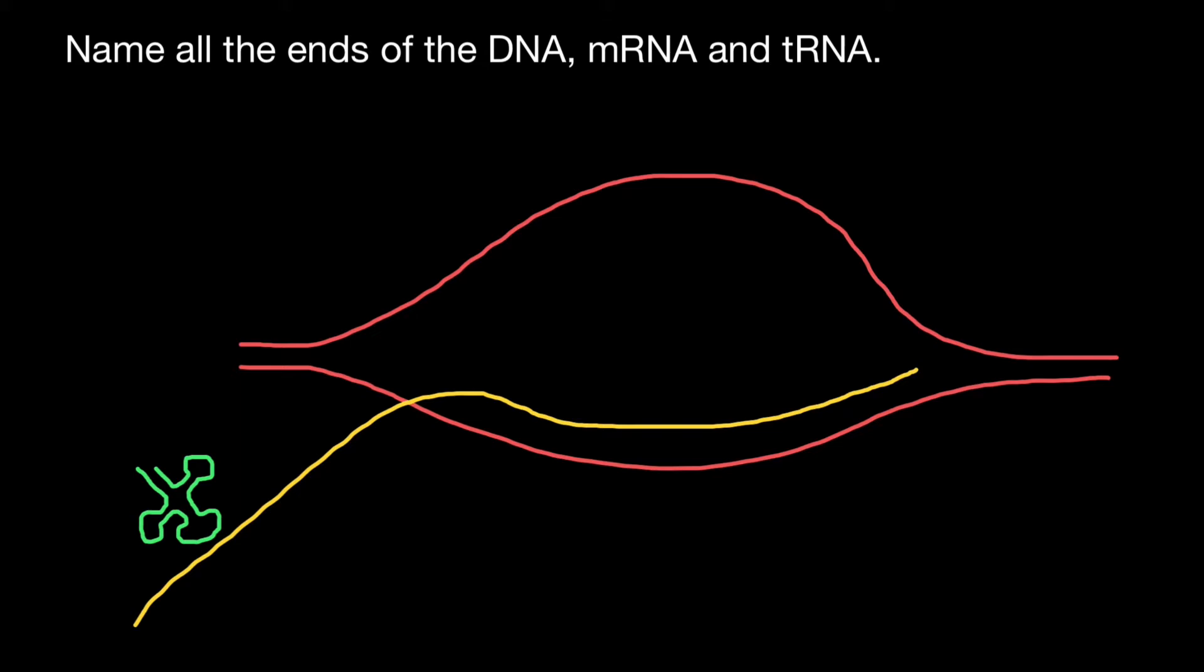Of course, tRNA is not going to be found attached to the messenger RNA by itself, but it's going to be part of the large ribosomal subunit. And here we also can find the small ribosomal subunit.